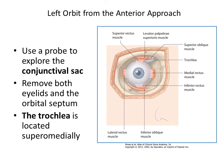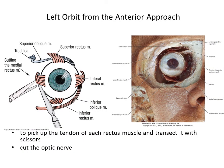Now we're going to do the left orbit from an anterior approach. Just use a probe and explore the conjunctival sac, which has been removed in this picture here. Then you're going to be able to remove both eyelids and the orbital septum, and then you might actually find the trochlea superomedially — this is going to be important because this is where your superior oblique passes through. What you're going to do is take a probe and pick up the tendon of each of your rectus muscles and pull it forward and cut through it with scissors. Do that for all of the rectus muscles, and also with the optic nerve and your oblique muscles. Then you should be able to remove the eyeball.